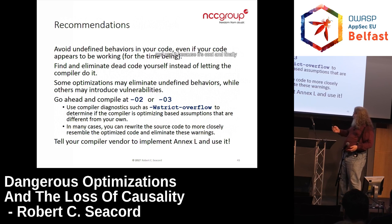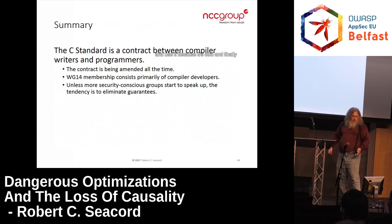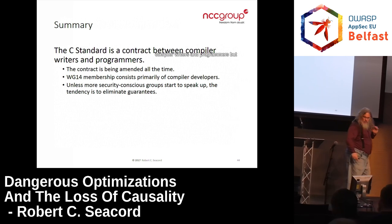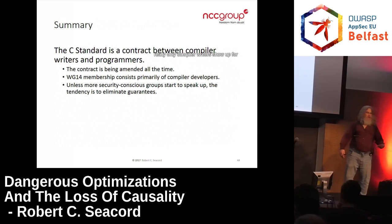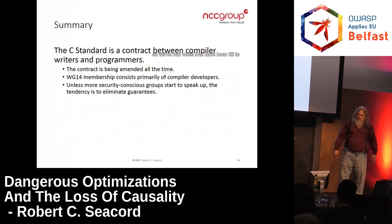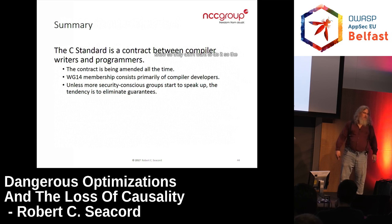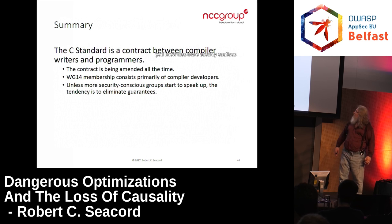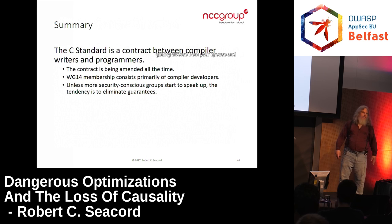Tell your vendor to implement Annex L and use it. The C standard is a contract between compiler writers and programmers, but really only compiler writers show up — and me, and the guy from Cisco. We've had votes that have been 30 to 2. The contract is continually being amended, and unless more security-conscious groups get involved, the tendency is to eliminate guarantees from the standard. It's like getting divorced from your spouse and telling your spouse to just handle the divorce — you'll be happy whatever the outcome is. That's not going to work out good for you.